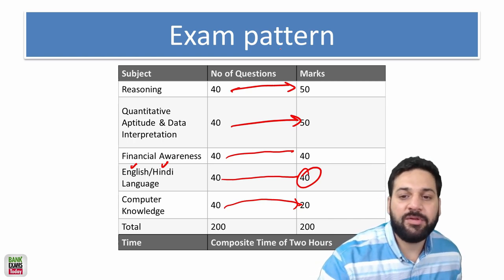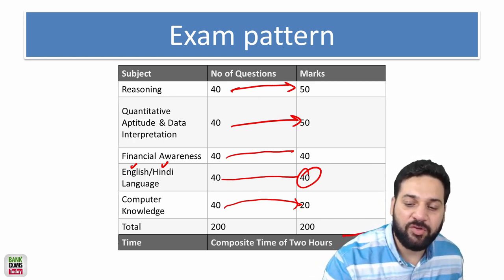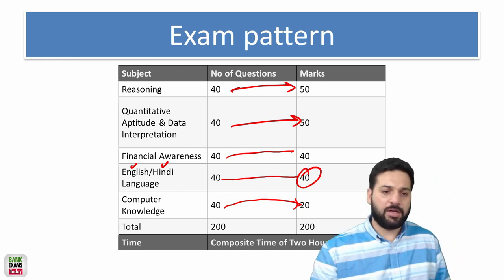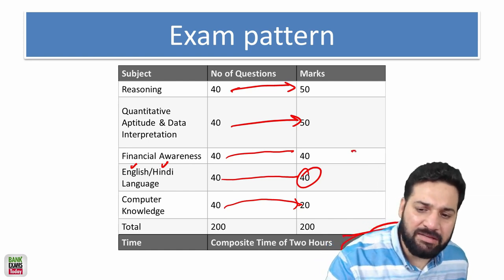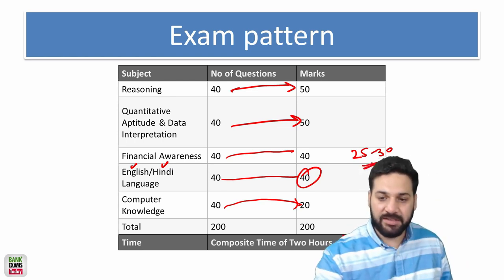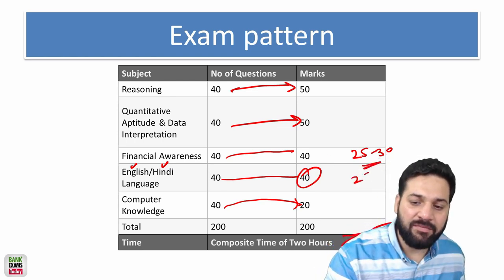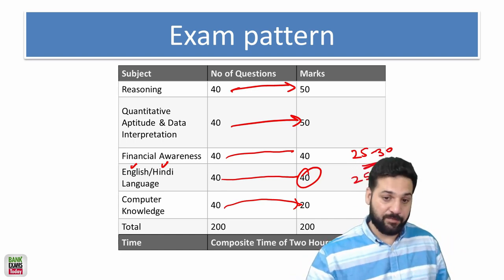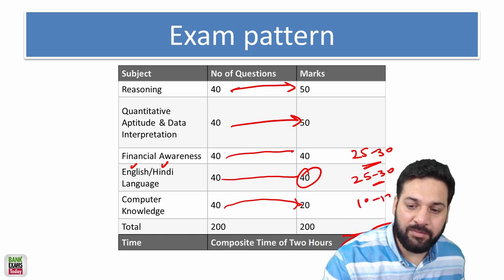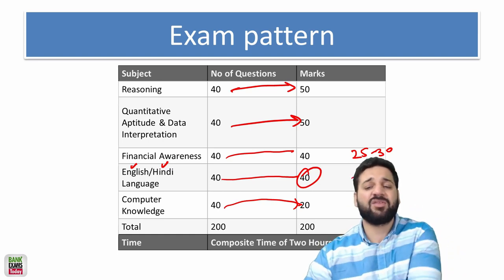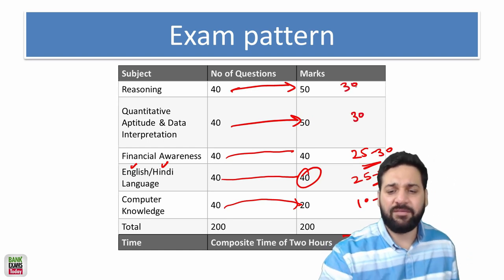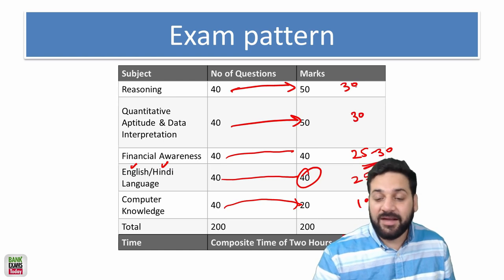So 40 questions, 50 marks. I can expect the cutoff should be between 70 to 75, the overall cutoff. You can easily score 20 to 25 to 30 in financial awareness, even 25 to 30 easily in English language, it's really easy actually. Normally what I have seen, 10 to 12 marks in computer knowledge.